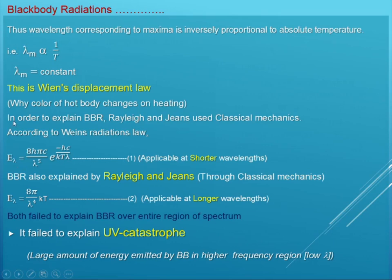Now, in order to explain black body radiations again, another scientist — Rayleigh and Jeans — used classical mechanics. According to Wien's Radiation Law, Wien proposed one mathematical equation: E_lambda equal to 8πhc divided by lambda to the power 5 into exponential minus hc divided by lambda kT. This equation, put forward by Wien, is applicable to the shorter wavelength only.